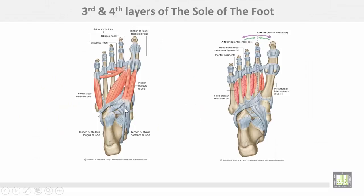This is the third layer: the adductor hallucis, flexor hallucis brevis, and flexor digiti minimi brevis. The fourth layer: tendon of tibialis posterior from the medial side, peroneus longus from the lateral side, and the interossei muscles — three plantar and four dorsal interossei.